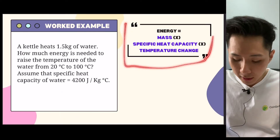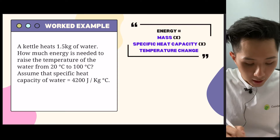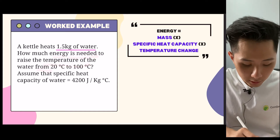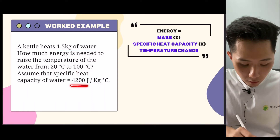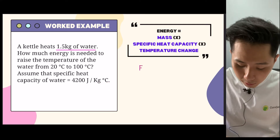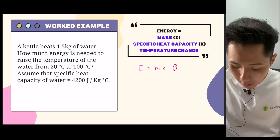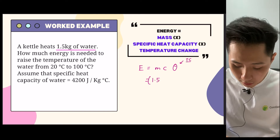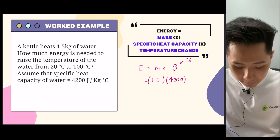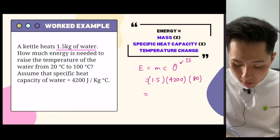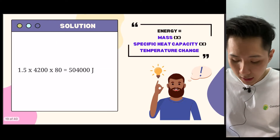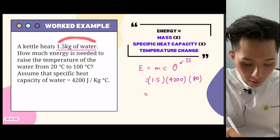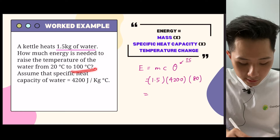Let's solve a question using the formula. A kettle heats 1.5 kilograms of water. How much energy is needed to raise the temperature of the water from 20 to 100 degrees Celsius? Assuming specific heat capacity is 4,200 joules per kilogram per degree Celsius. We use the formula E = mcΔθ, where delta means temperature change. E = 1.5 × 4,200 × 80. Putting everything into the calculator gives 504,000 joules — that's the amount of energy needed to heat up 1.5 kilograms of water through that temperature range.